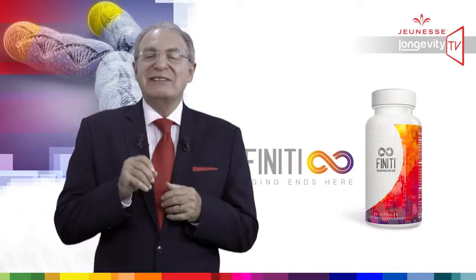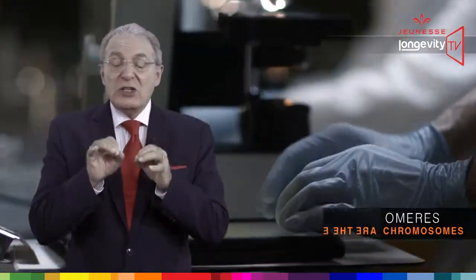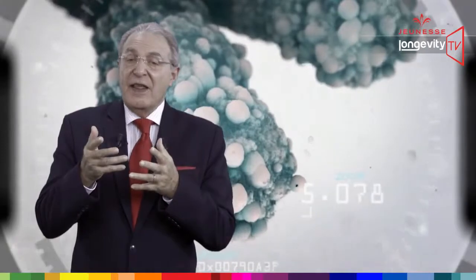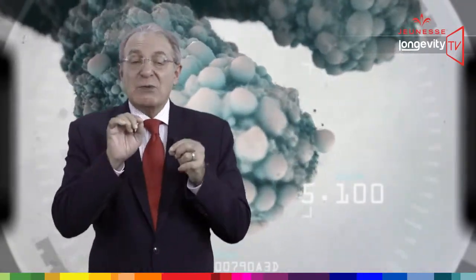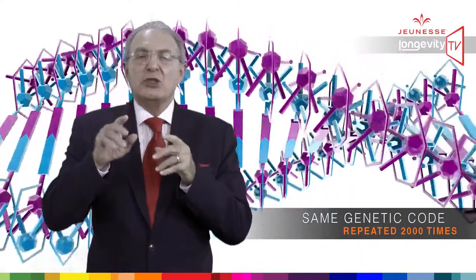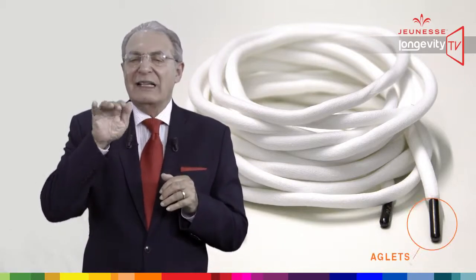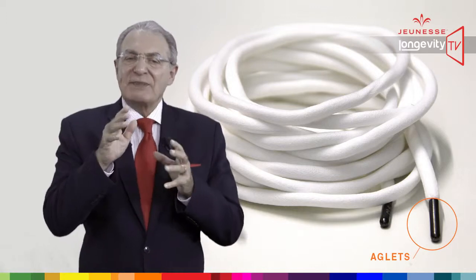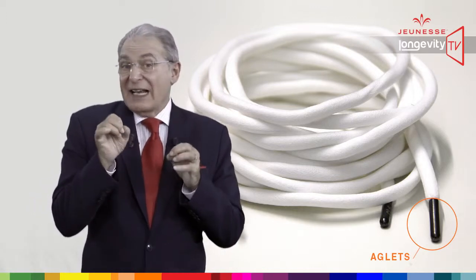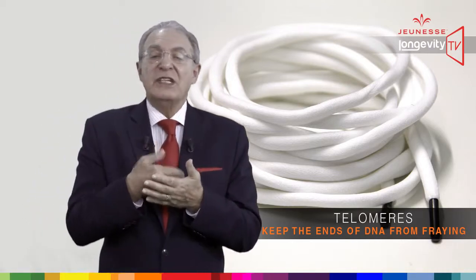Have you heard about telomeres? Probably not. Telomeres are at the end of the chromosome — they are here to protect our DNA. They are also made of DNA, but the sequences which are forming telomeres are repetitive DNA, which means they are made of the same genetic codes repeated two thousand times. One way to describe telomeres is to compare them to aglets — the plastic caps at the end of shoelaces. Just as aglets keep shoelaces from falling apart, telomeres keep the ends of DNA from fraying.